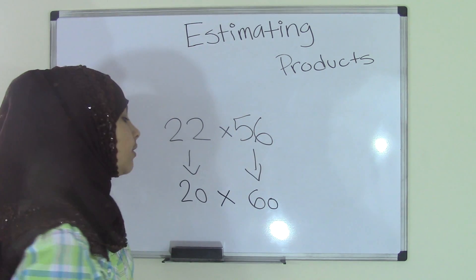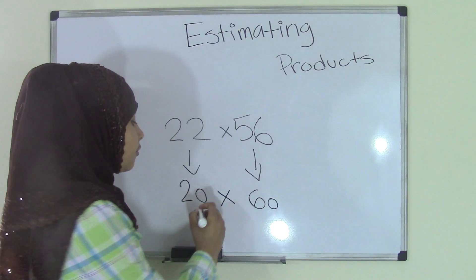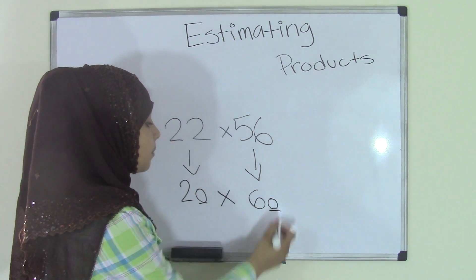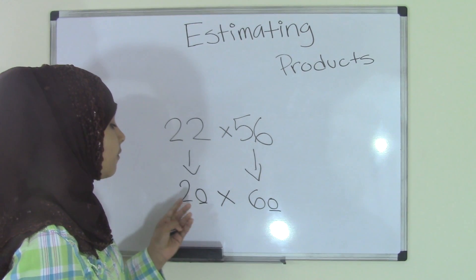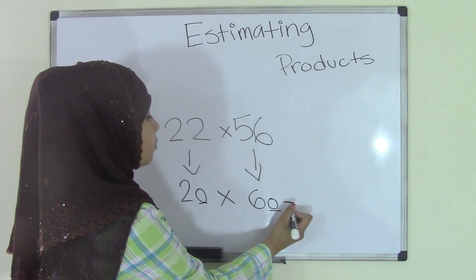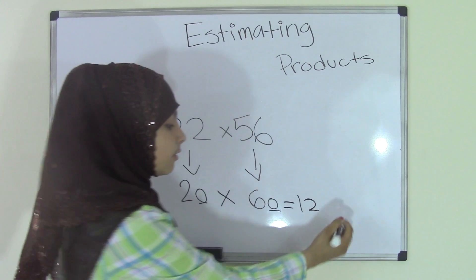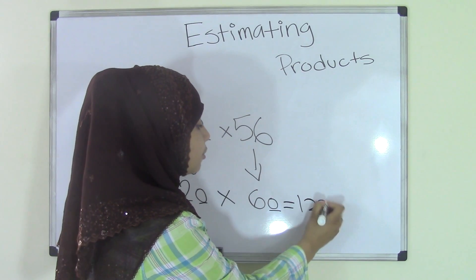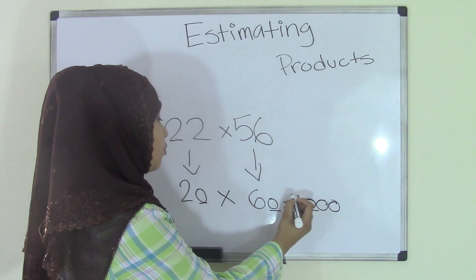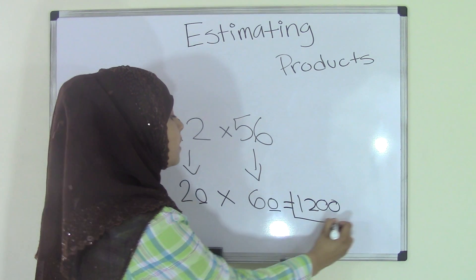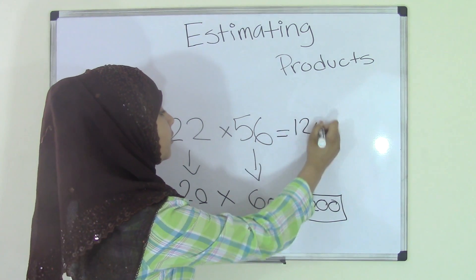So now all you have to do is simple multiplication — that means 20 times 60. I like to remove the zeros when doing such problems because it makes it easier. Now we just do 2 times 6, which equals 12, and then add back the two zeros we removed. That means the estimated product of 22 and 56 equals 1200.